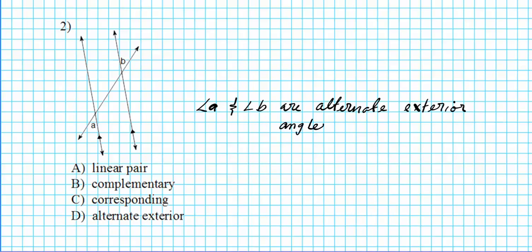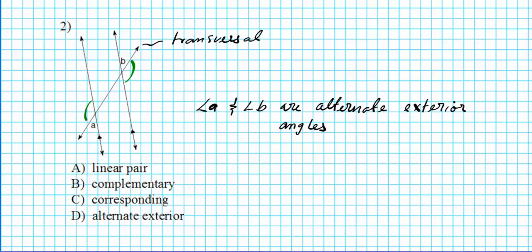The word 'alternate' basically means that they're on different sides of the transversal. So that's why they are considered alternate exterior angles. For example, this angle here and this angle here are also alternate exterior angles — different sides of the transversal and on the exterior of the two parallel lines cut by that transversal. The answer to number two is option letter B.